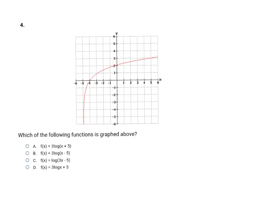Here's another one where we're matching a graph to an equation. Right away I see that it has a vertical asymptote at x equals negative five, so it's getting closer and closer to negative five but never crossing it. That means in my equation I'm going to have x plus five as part of my logarithmic equation — the vertical asymptote is x equals negative five, so it's the opposite in the parentheses. The only answer that has x plus five in parentheses is A, so A is my answer.